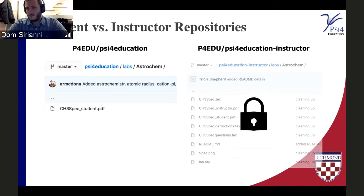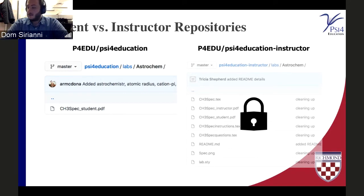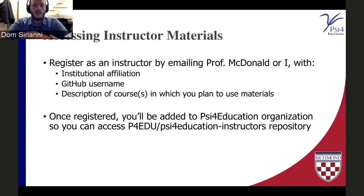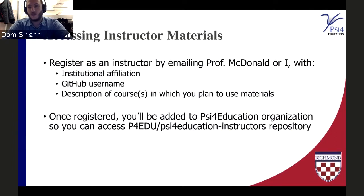This is a private repo, which basically means that if you tried to go to the Cipher Education instructor repository, you wouldn't be able to access it. How we ask people to get in touch is to register as an instructor with us by emailing either Professor MacDonald or me, providing your institutional affiliation, your GitHub username so that we can add you to the repository, and just a little description of the courses that you want to use the materials in.